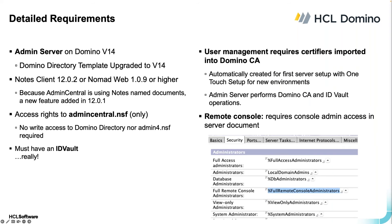The main requirements: you obviously need your admin server to be Domino v14, the template has to be upgraded, and you need a Notes 12.0.2 client or Nomad Web 1.0.9 or higher. Admin Central uses a new feature introduced in 12.0.1 called named documents. Access rights: you only need access to Admin Central, not the whole download directory. You really have to use an ID vault — it's about time to set up your ID vault if you haven't. All the improvements we've done with automatic processing like rename, recertify, rollover with Admin Queue in 12.0 give you a lot of bang for the buck.